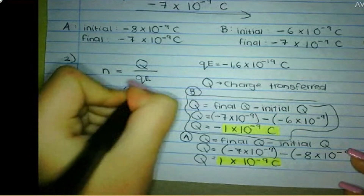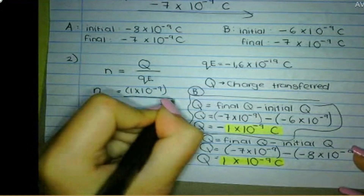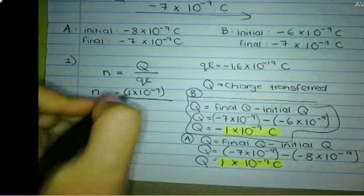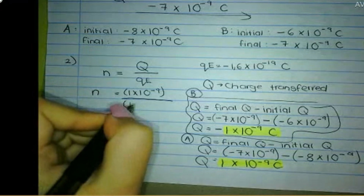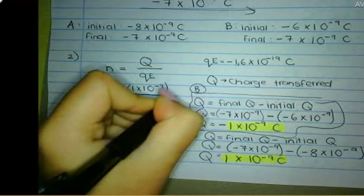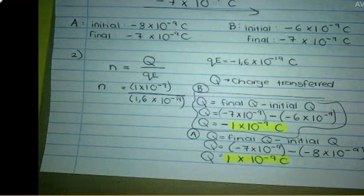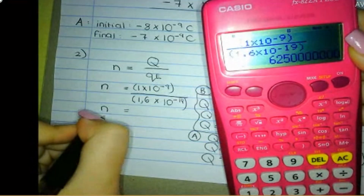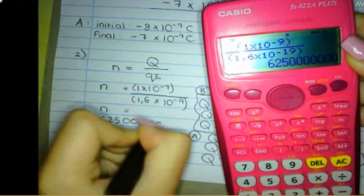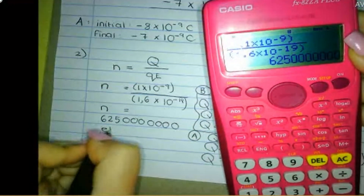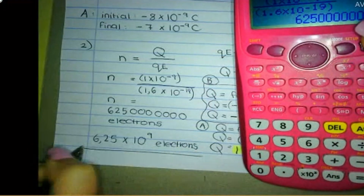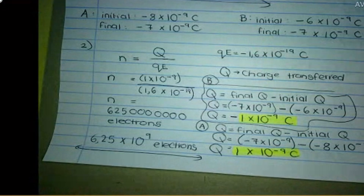So Q is 1 times 10 to the negative 9, and QE is 1.6 times 10 to the negative 19 — we don't care about the sign. Therefore the number of electrons N equals 1 times 10⁻⁹ divided by 1.6 times 10⁻¹⁹, which gives 6.25 times 10⁹ electrons. That is a massive number, but we expect it to be — that makes sense.